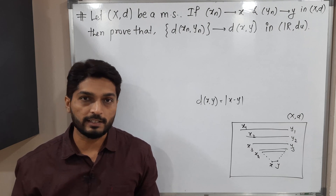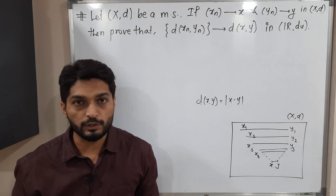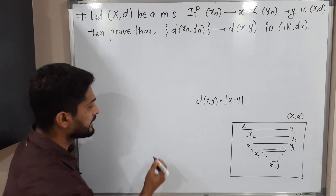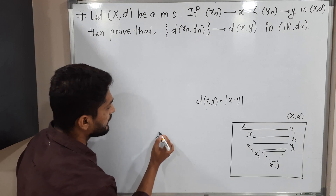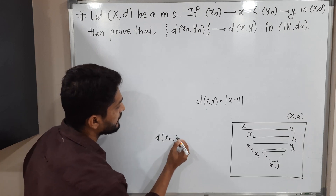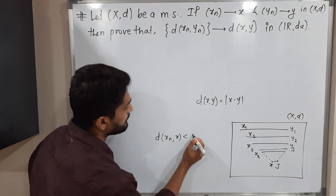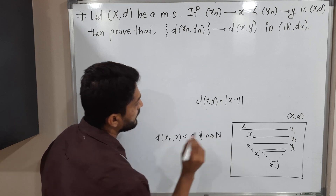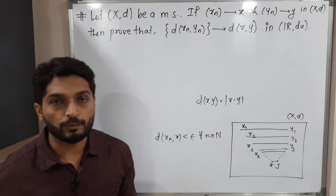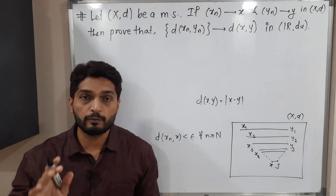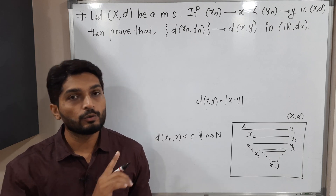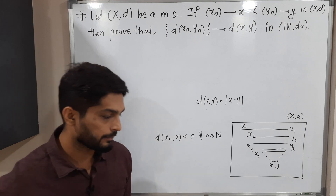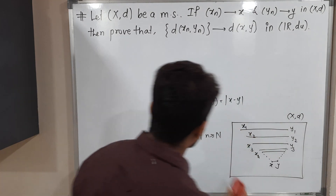We are familiar with the epsilon definition of a convergent sequence: for a given epsilon, there exists N such that d(xₙ, x) < epsilon for all n ≥ N. We are going to use this definition to solve the example.